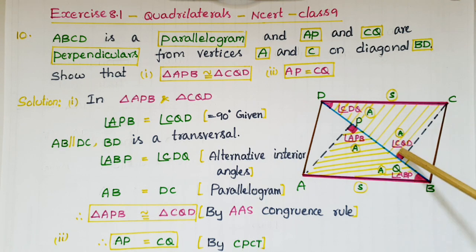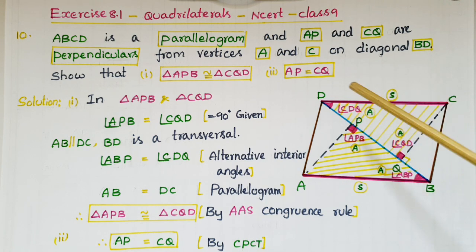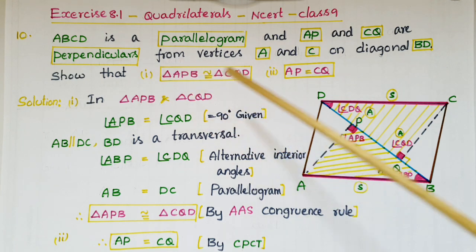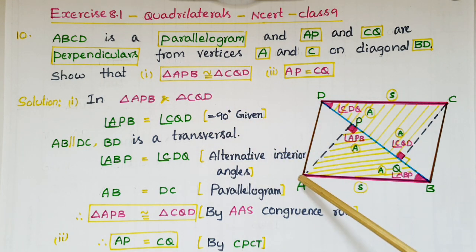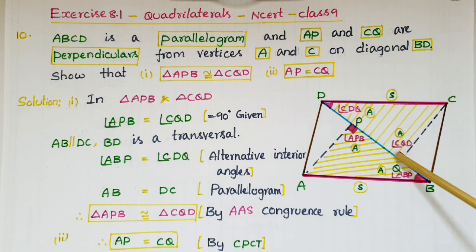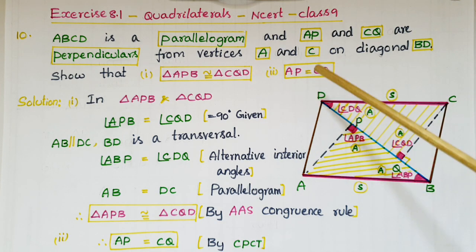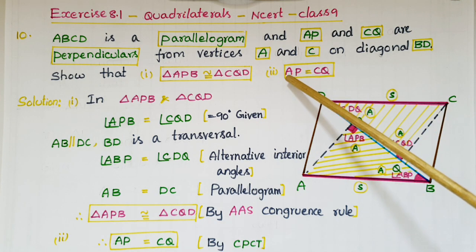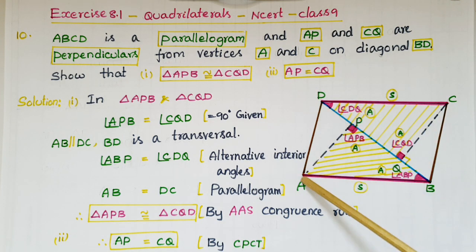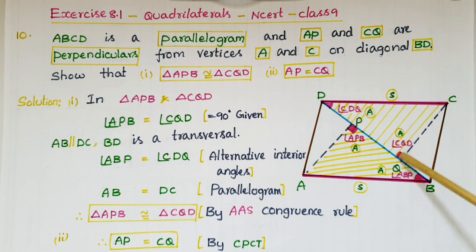So these two angles are 90 degrees, and now we have to show: first, that triangle APB is congruent to triangle CQD, and second, that AP is equal to CQ.